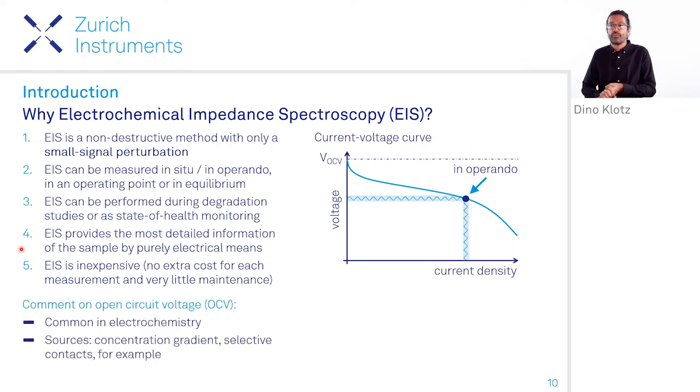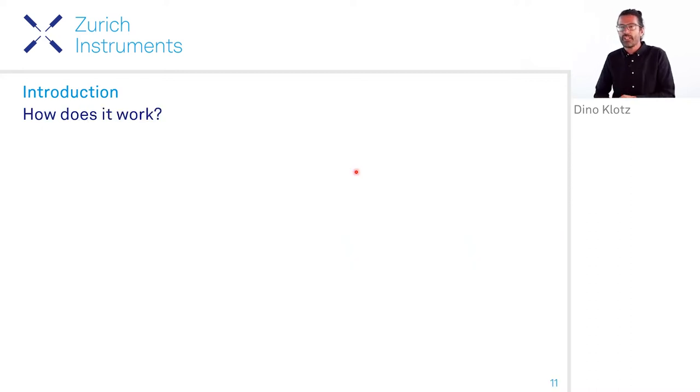A quick note, a comment about the open circuit voltage that's imminent in electrochemistry. We usually, if we don't draw a current, we have some open circuit voltage, for example, for fuel cells, batteries, because there is a concentration gradient in the system that leads to a chemical potential that's counteracted by an electrical potential. Or another reason could be that there are selective contacts, as it's the case in solar cells, for example. But nevertheless, in any point, you can perturbate the system out of this with our impedance analyzer and then measure impedance spectroscopy.